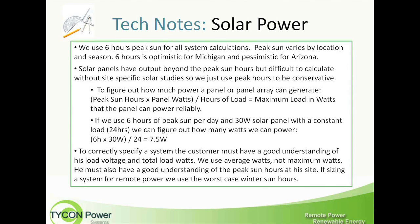Solar panels do generate power beyond the peak sun hours, but it's difficult to calculate because it varies at different angles and latitudes. It's very difficult to calculate those off-peak hours. Basically, the peak hours are where the sun is almost directly overhead going through its arc — it discounts the morning sun and the afternoon sun.